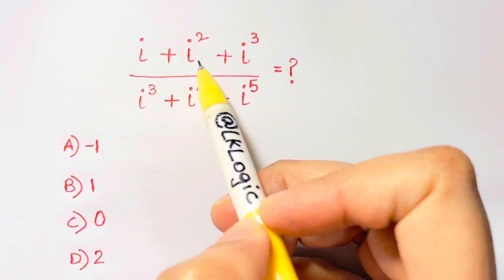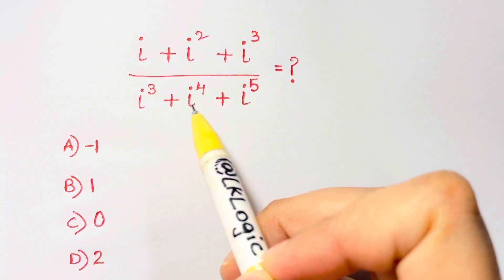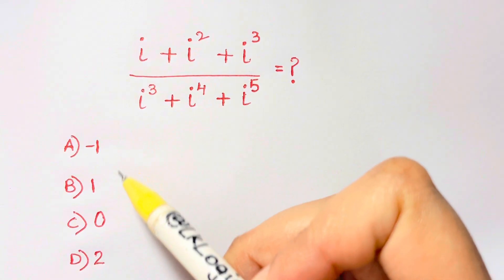Hi guys, what is i plus i squared plus i cubed over i cubed plus i to the 4 plus i to the 5 equals what? And you have 4 choices.